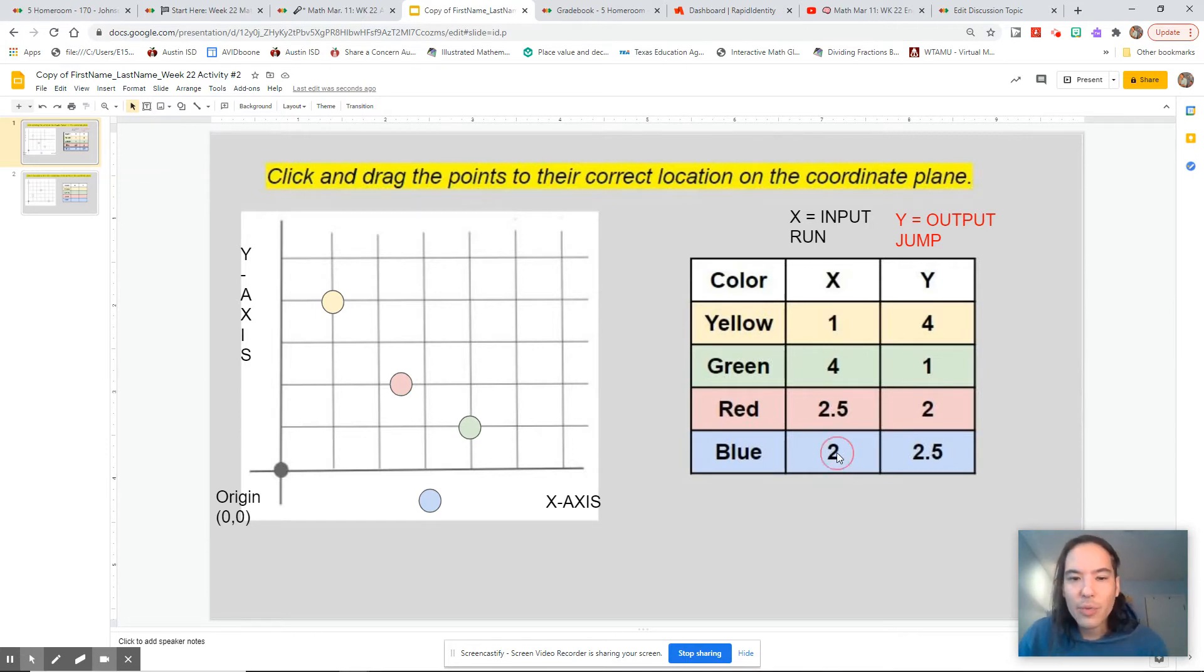And then finally we have the point run two, jump two and a half. Alright, so what we're going to do is we're going to run one, two on our x, and we are going to jump one, two and a half on our y. So we ran two, we jumped two and a half. So we have our yellow dot on one, four. We have our green dot on four, one. We have our red dot on two and a half, two, and we have our blue dot on two, two and a half.